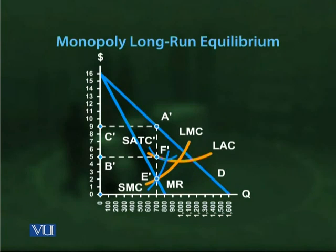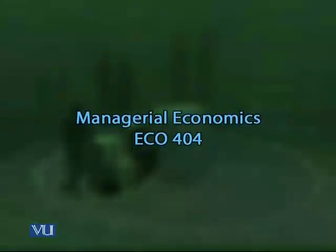The reason the monopoly earns economic profit is that entry into the market is blocked. These above-normal profits are a benefit to the monopolist and its stockholders, but they represent a real social cost to society. In the competitive market model, the price that equates quantity demanded and quantity supplied also maximizes social welfare in terms of consumer surplus. Under monopoly, these above-normal profits come at a cost to consumers — the monopoly produces too little output at too high a price.